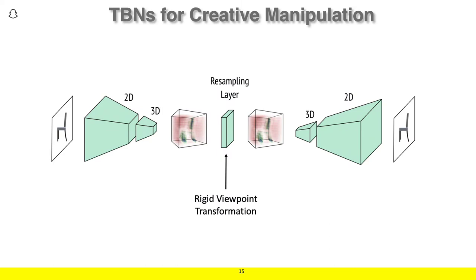The most interesting aspect of our approach is that it allows for creative image manipulation beyond novel view synthesis and 3D reconstruction. To enable this, consider the training process — we simply use rigid viewpoint transformations during training on a multi-view dataset. However, because of the flexible way we parameterize this transformation during inference, we can replace the rigid viewpoint transformation with an arbitrary spatial transformation, including pose transformations as well as any other non-rigid manipulation. We can even take encoded bottlenecks from different input images and combine their content.